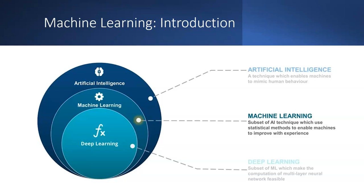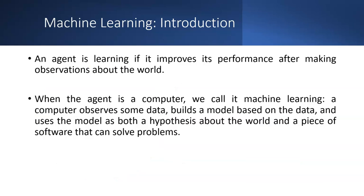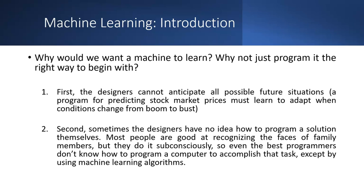Machine learning is a subset of AI that uses statistical methods — such as probabilities, decision trees, or clustering — to enable machines to improve with experience. An ML agent learns by improving its performance after making observations about the world. When a computer does this, it builds a model used both as a hypothesis about the world and as software that can solve problems.